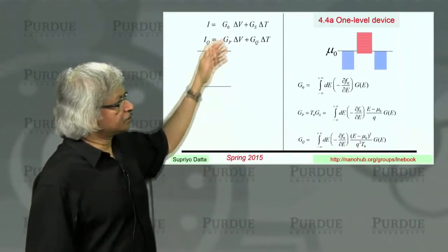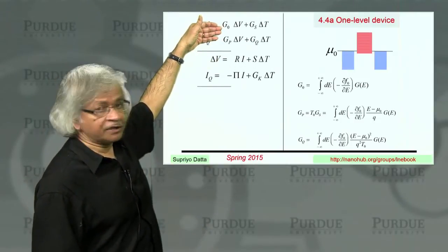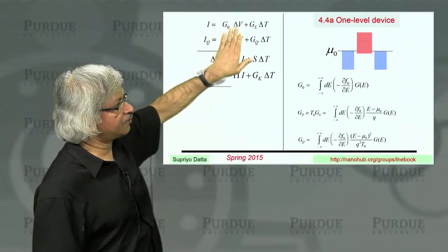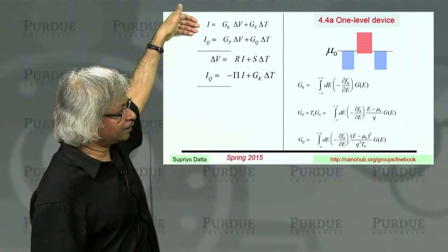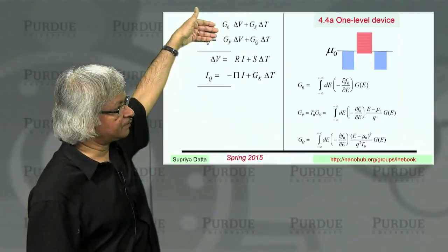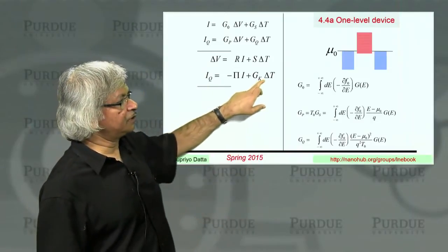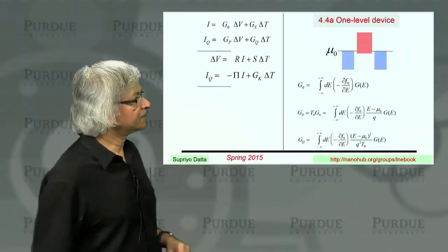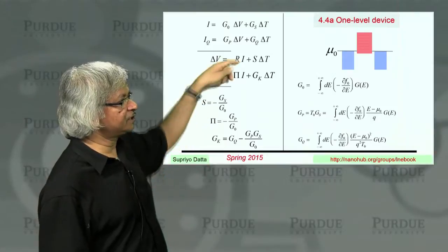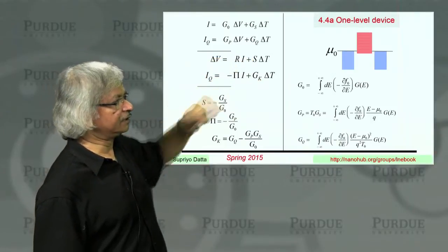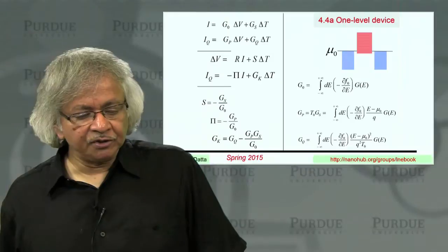We also talked about this slightly different form for the transport coefficients, these thermoelectric coefficients where instead of having the voltage on the right-hand side, you have the current. Theoretical models usually give you this, but in terms of experiments, usually these coefficients are more direct. And relating these two, we have these simple expressions for the Seebeck coefficient, the Peltier coefficient, and the heat conductance.